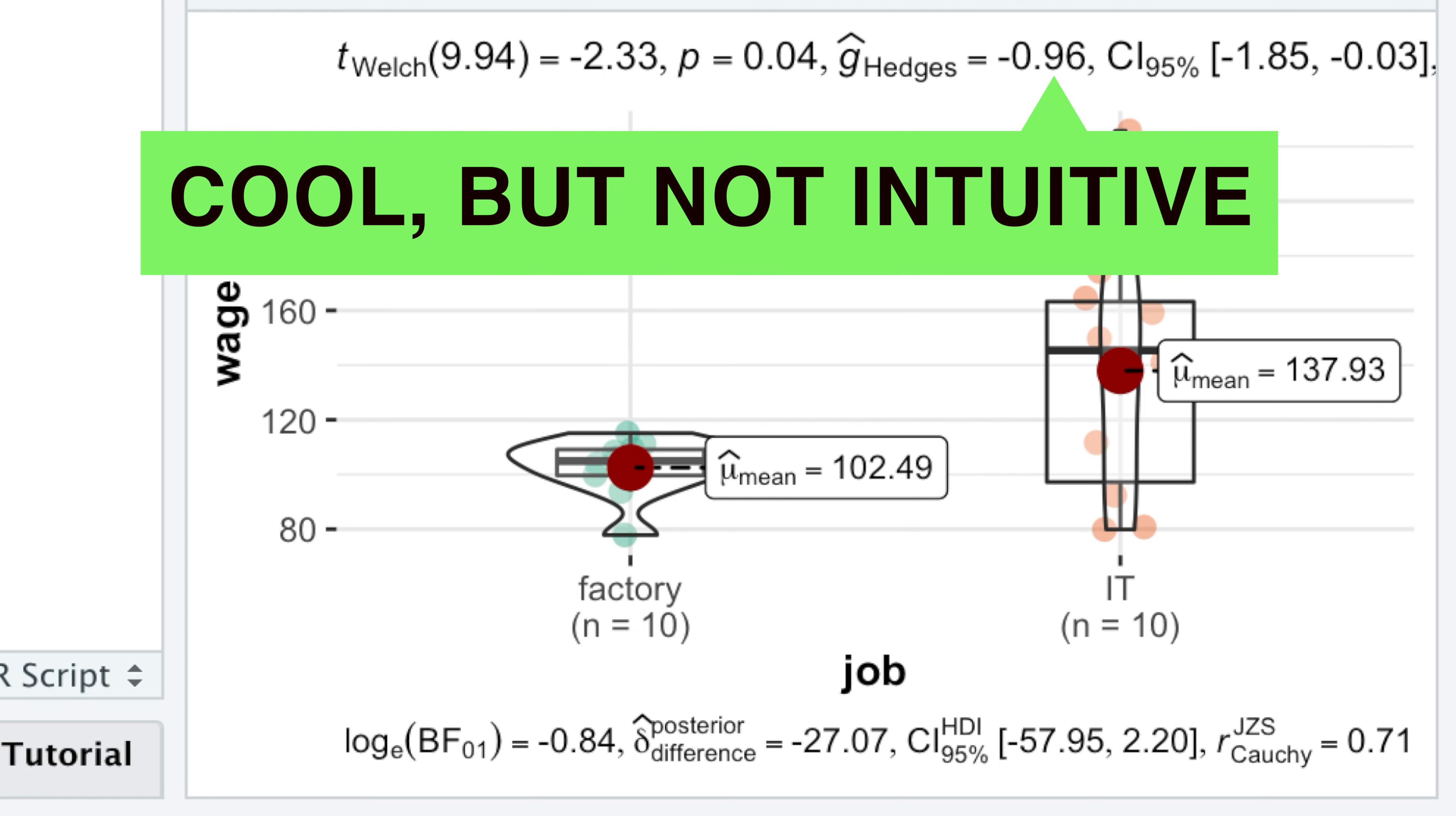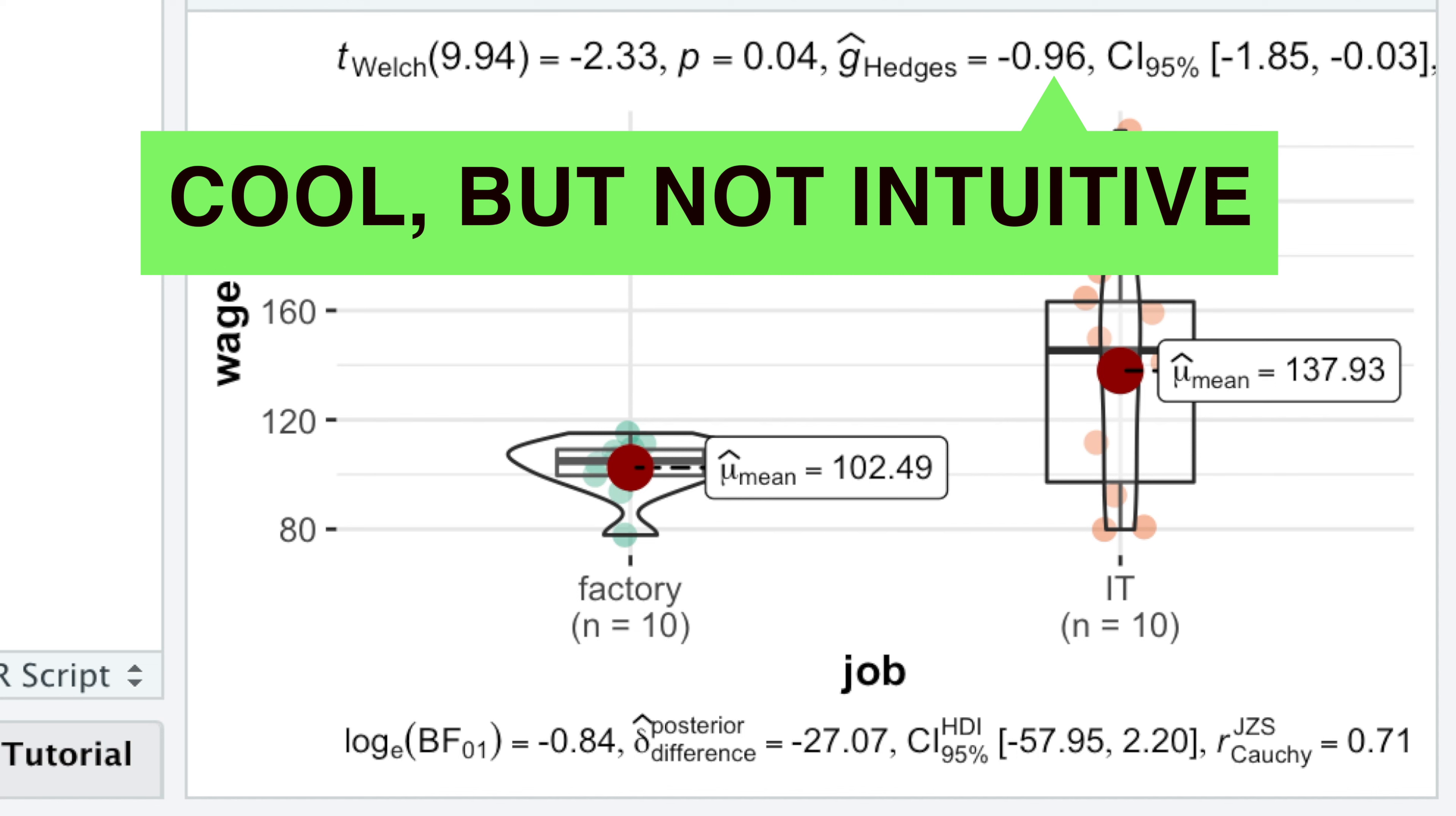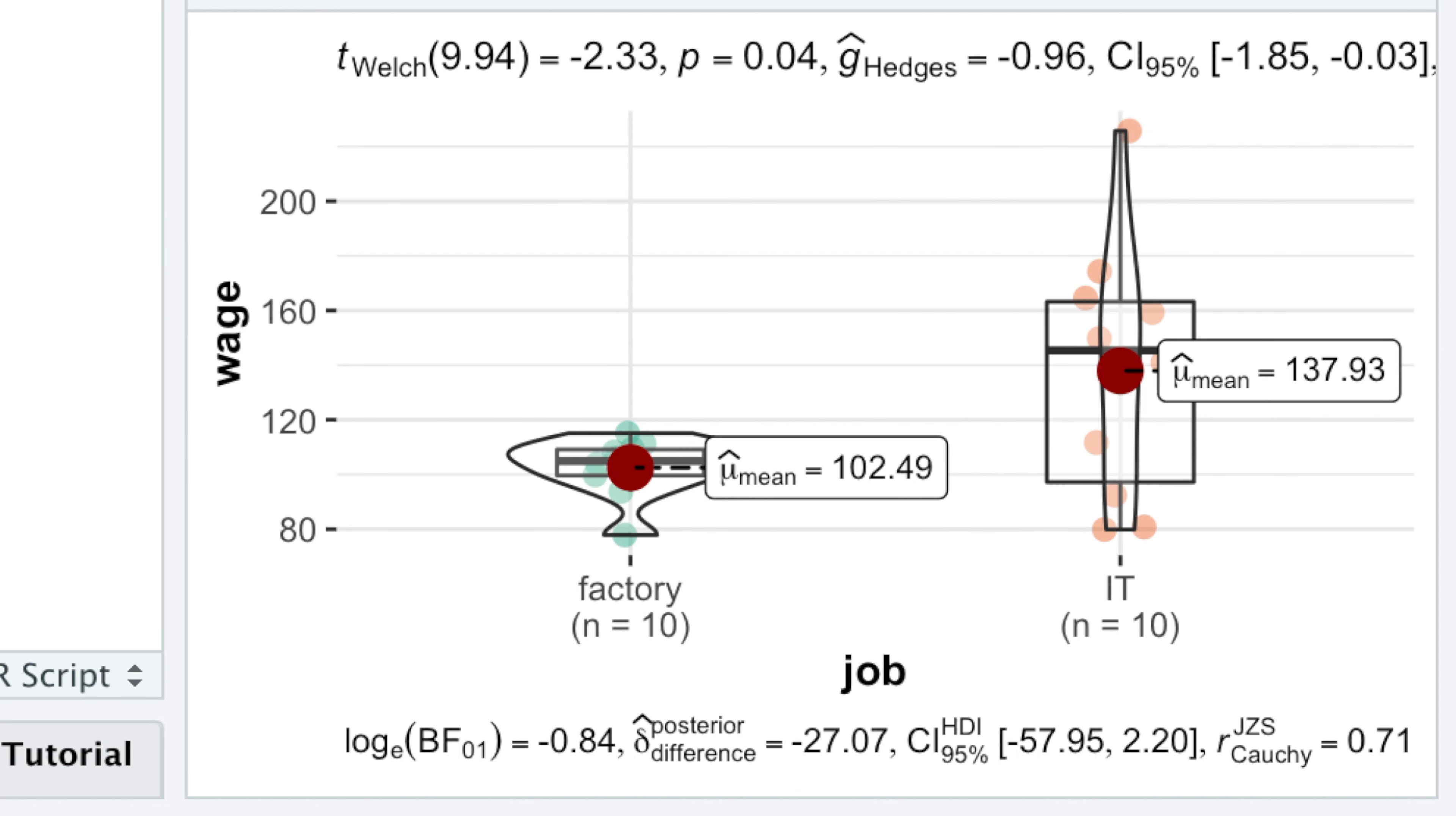Well, the effect size is cool, but not particularly intuitive, right? Luckily, ggBetweenStats provides the Bayesian difference between our samples with 95% highest density intervals as the second and more intuitive measure of the effect size.